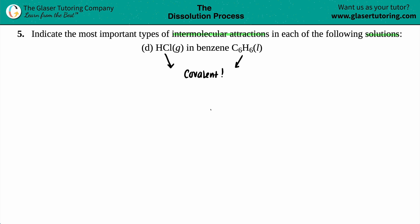For HCl: hydrogen is bonded to chlorine with a single bond, and chlorine has six lone electrons (three lone pairs). That's what HCl looks like.